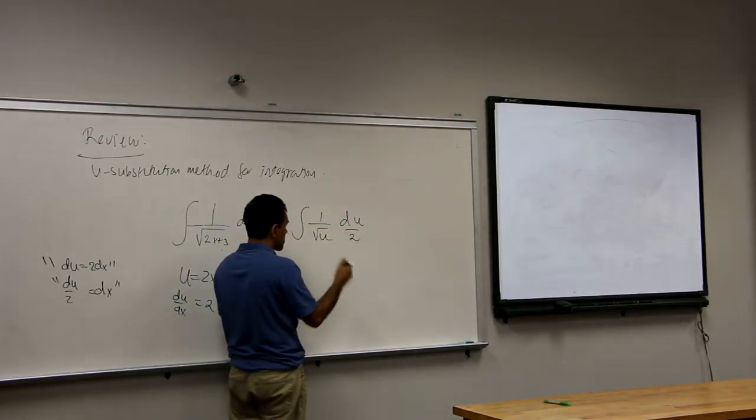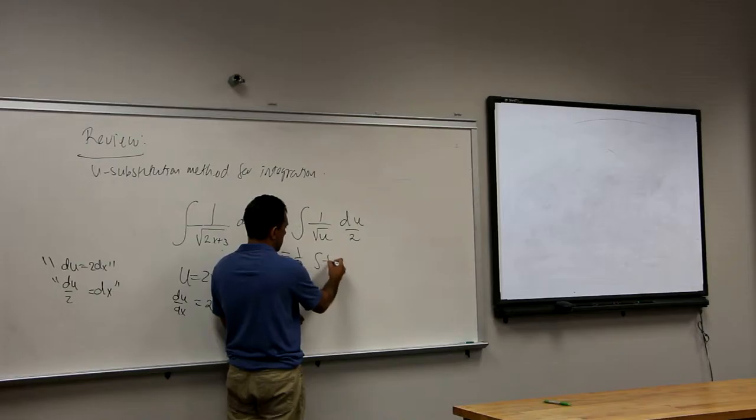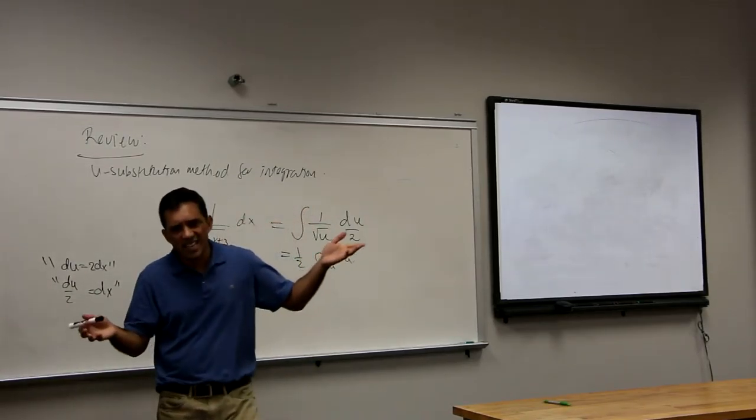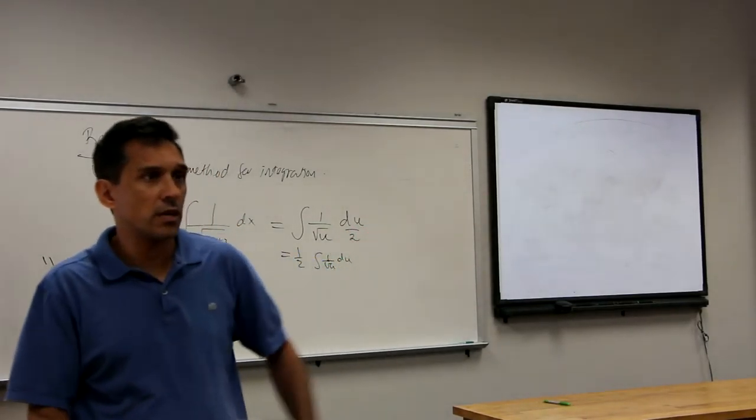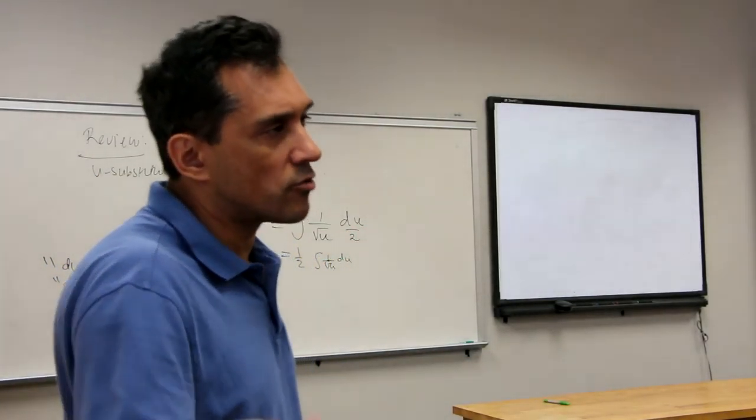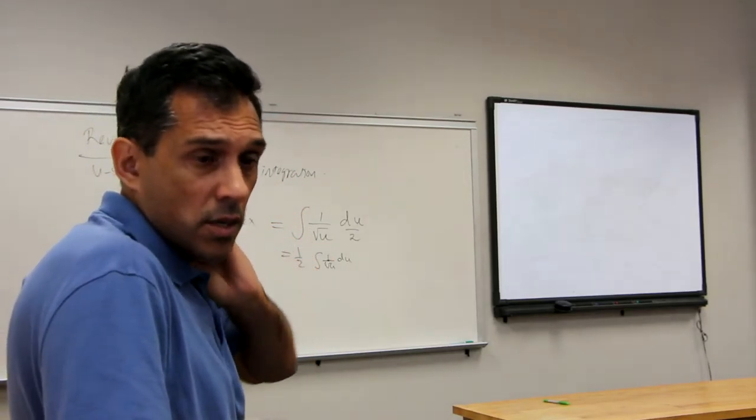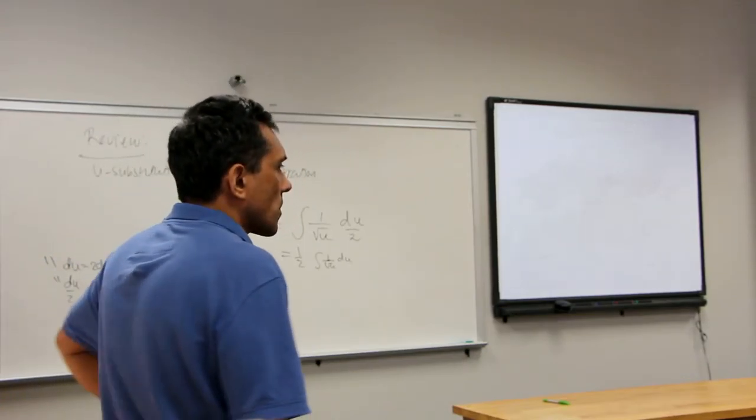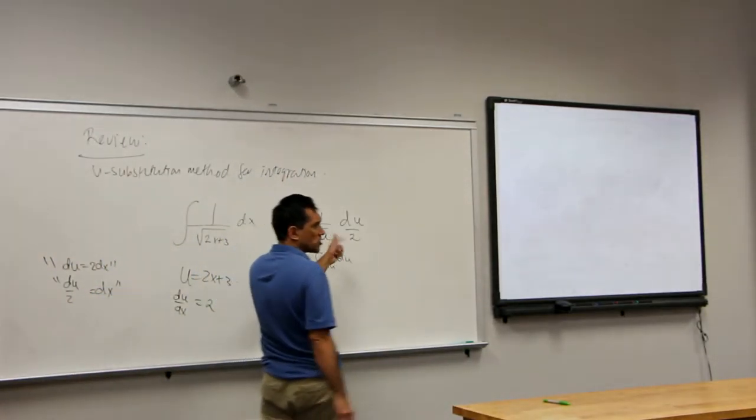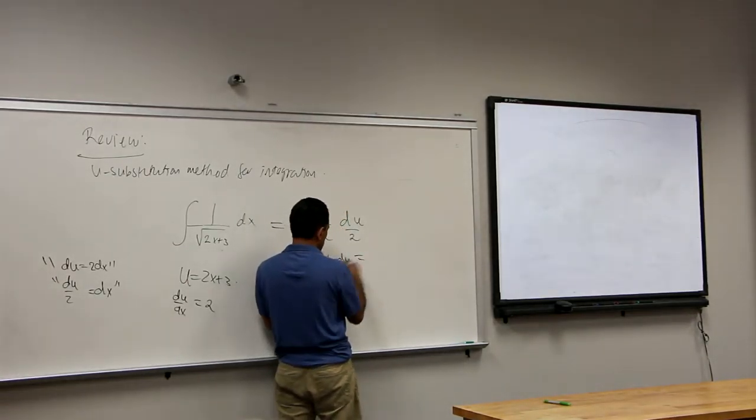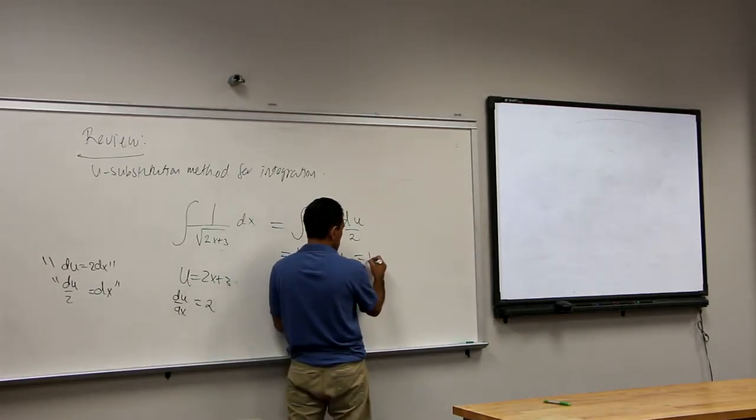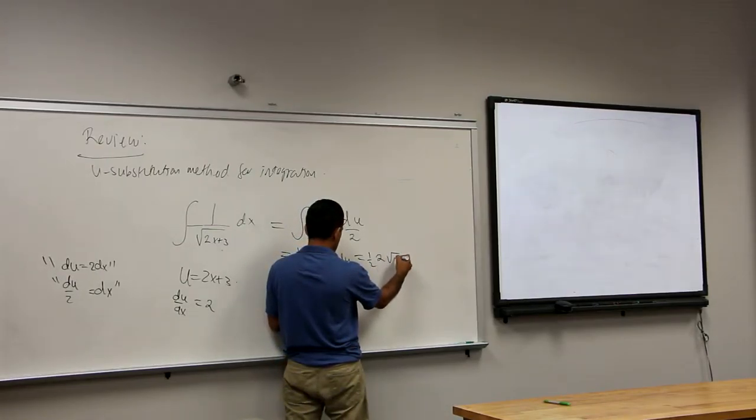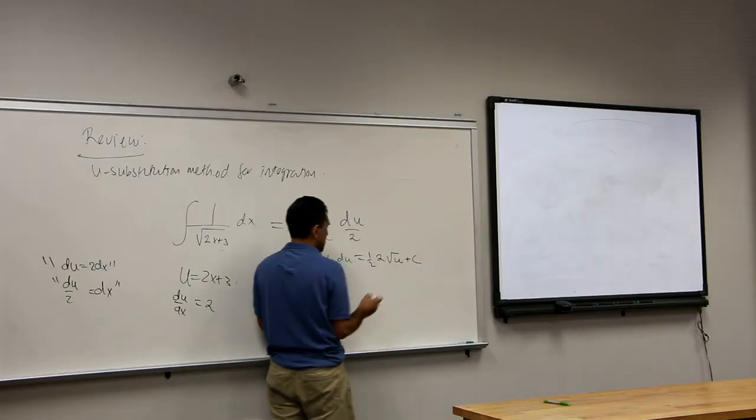Now I will use some properties of integration. I will just take the one half out. And I will write it like this. Which is to say what I said, that it's like an integral that we know how to integrate. One over radical x or one over radical u. So I will find the anti-derivative of this with respect to u. And then multiply by one half. Well, I know what the anti-derivative of this with respect to u is. So what is it? 2 radical u plus c.